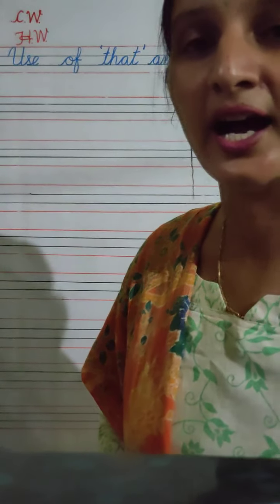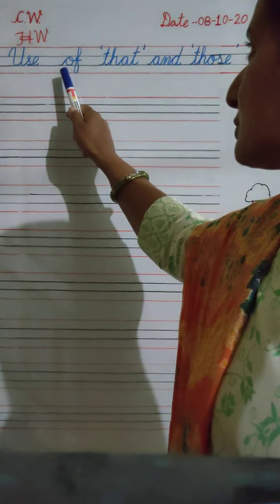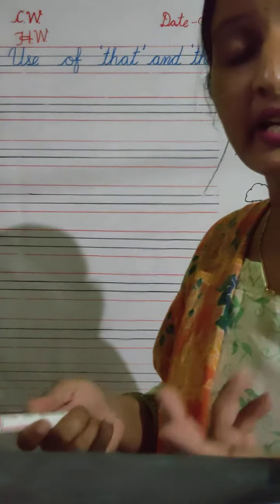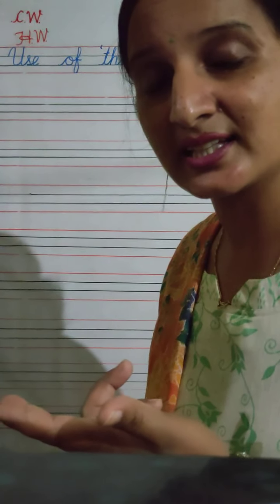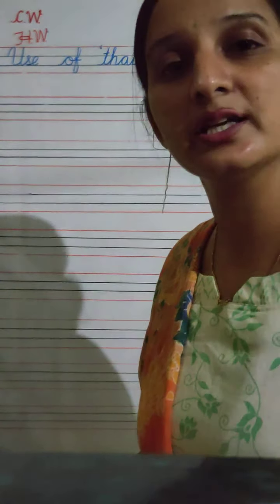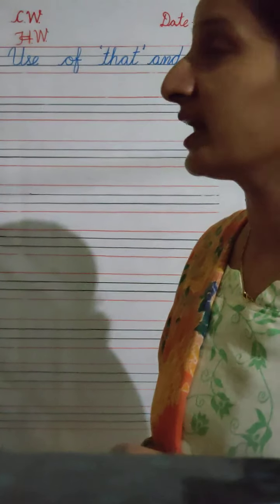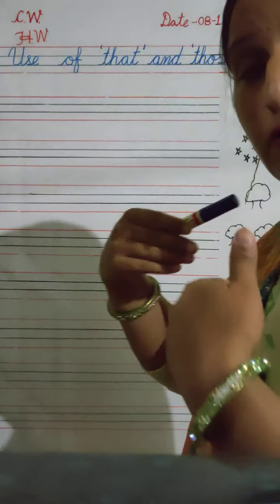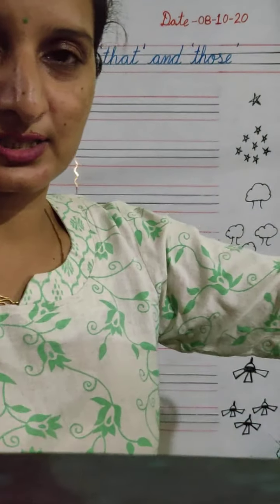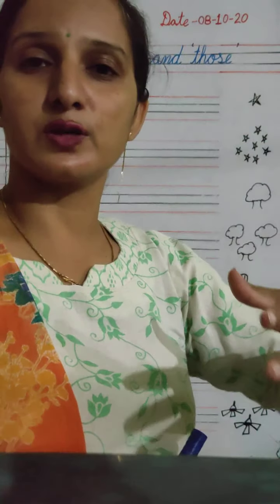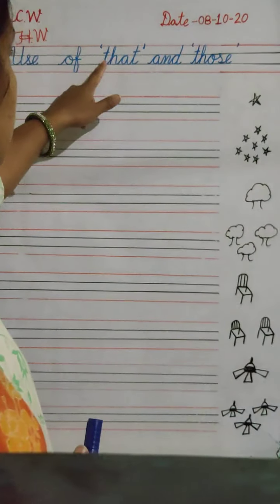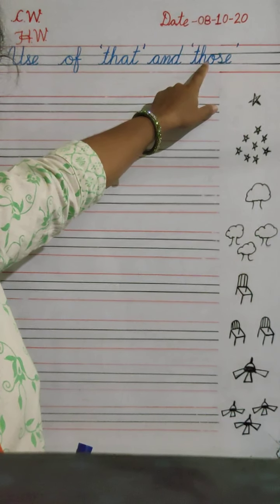And today I will teach you about the use of 'that' and 'those'. This and these are used for near things, and that and those are used for far things. If things are far from us — far means door. Agar cheezein, vastuvein, objects hum se door hain,